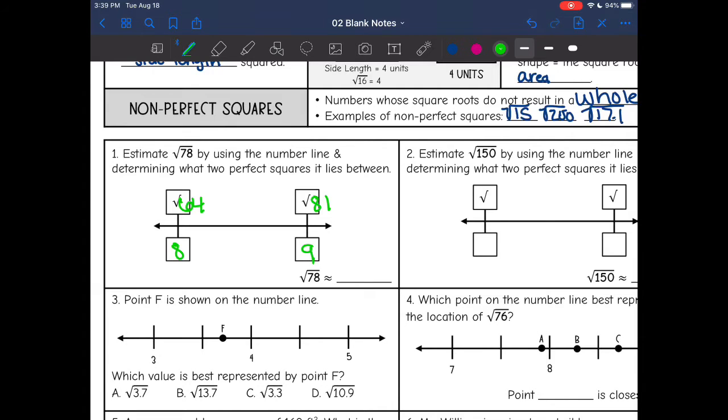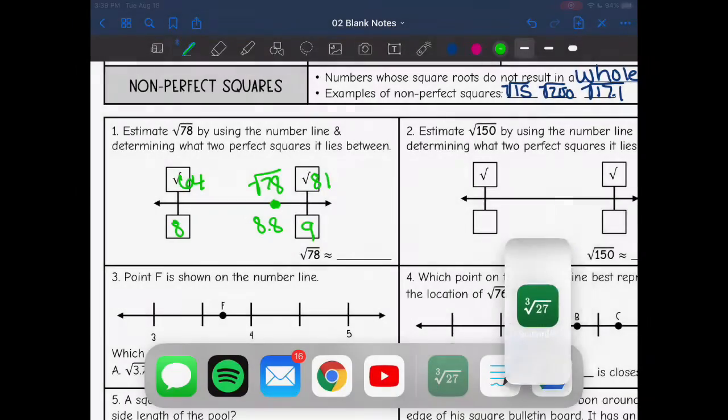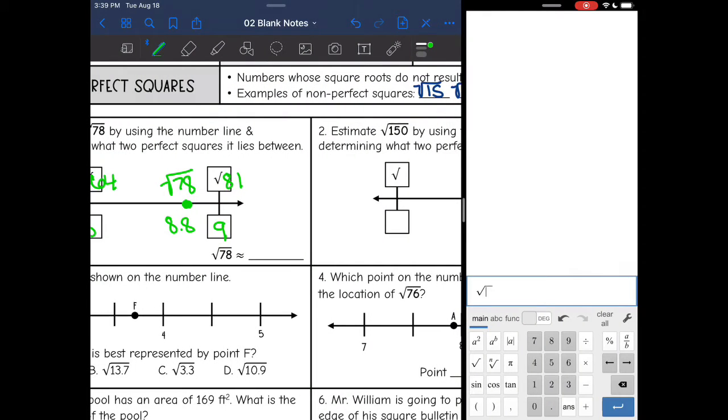So 64 and 81, so I'm going to put that about right here. So I'm going to estimate that to be about 8.8. It's pretty close to square root of 81, which is 9. Now let's double check that with our calculator. So I'm going to use that key right there, square root of 78, and I get a long decimal and it does round to about 8.8. So looks like I did that correctly.